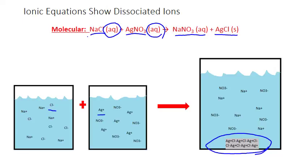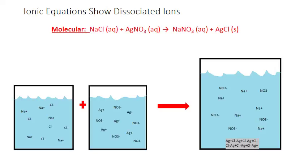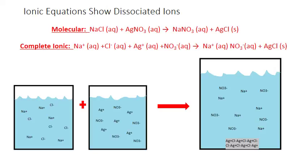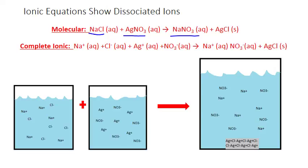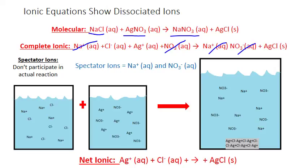We can represent all of this in ionic equations. A complete ionic equation shows all the dissociated ions formed from each ionic compound. We can then eliminate the spectator ions — the sodium and nitrate — that remain dissociated throughout the reaction. The net ionic equation shows the heart of this reaction: silver ions and chloride ions coming together to form an insoluble product, solid silver chloride (AgCl).